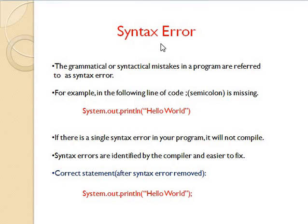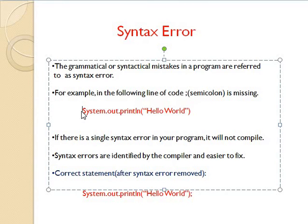Now let's start with the syntax error. The grammatical or syntactical mistakes in a program are referred to as syntax error. For example, in the following line of code, a semicolon is missing at the end. At the end of this statement, a semicolon is missing, so this statement will present you with a syntax error. If there is a single syntax error in your program, it will not compile. Syntax errors are identified by the compiler and they are easier to fix.